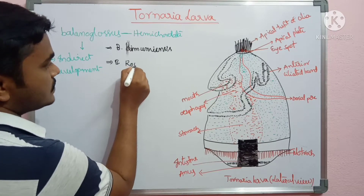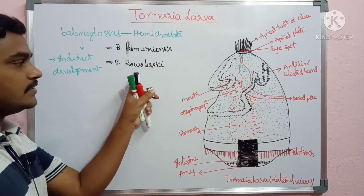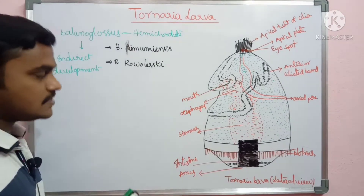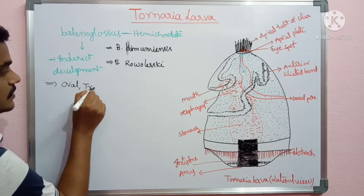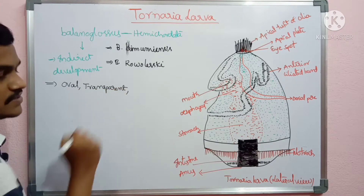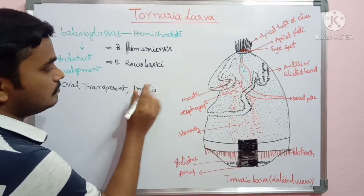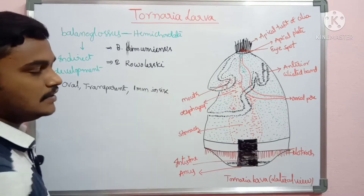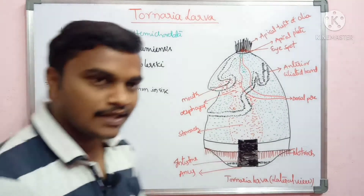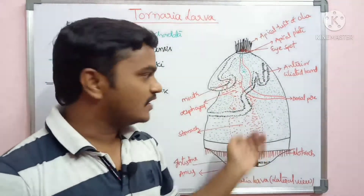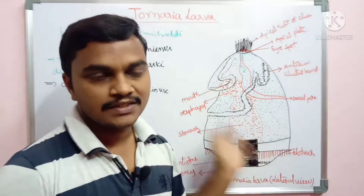We can see tornaria larva in two different forms: one in Balanoglossus minutensis and another in Balanoglossus Kowalevskii. The tornaria larva is oval in shape, transparent in nature, and it grows to about 1 mm in size. Now we can see the diagrammatic representation of the tornaria larva and its parts.